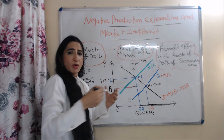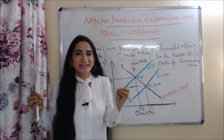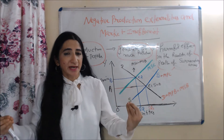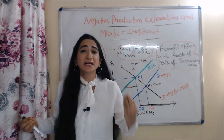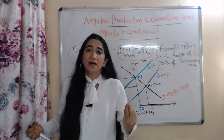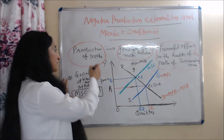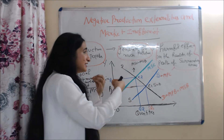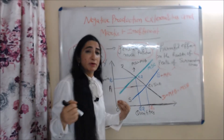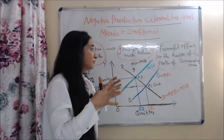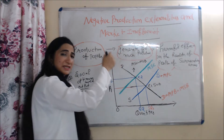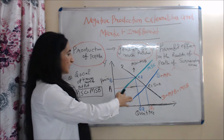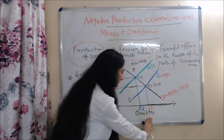First we will talk about negative production externalities and market inefficiency, or market failure. Negative production externalities means when a production activity creates a negative impact on an unrelated third party. For example, production of textiles generates so much pollution and it is creating a harmful effect on the health of people in the surrounding area.